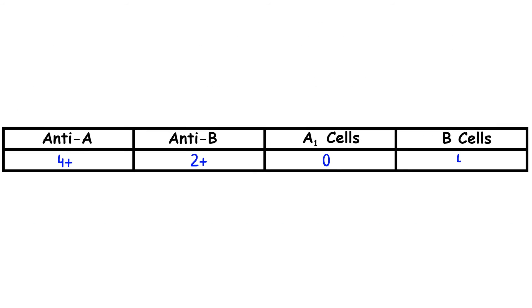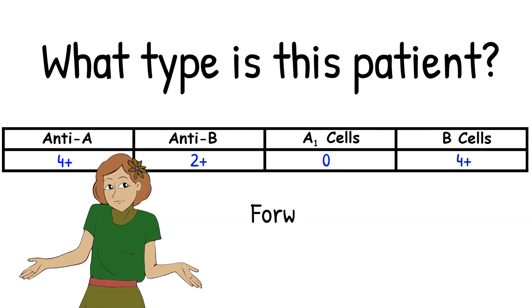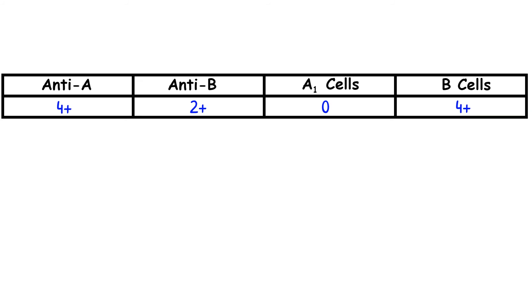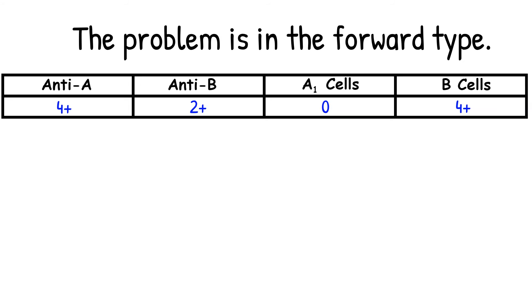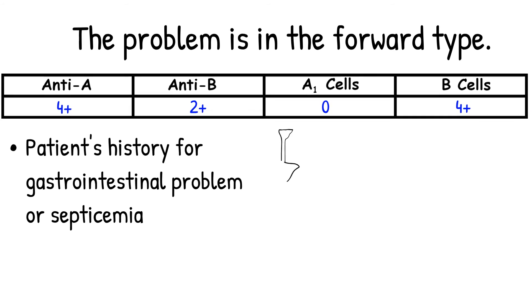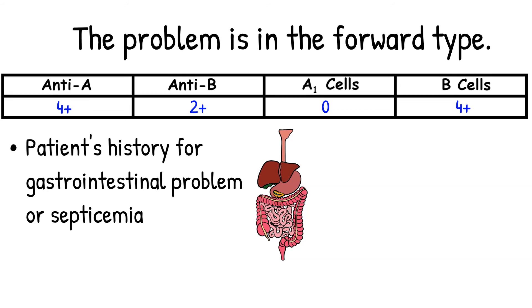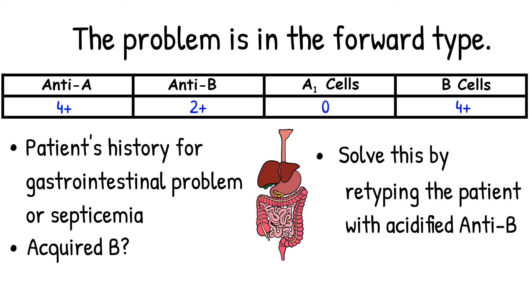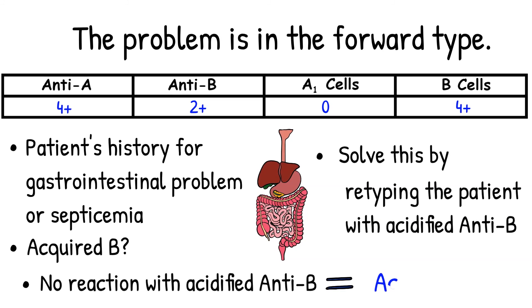One more example. What would you do if you see this type of reaction? The forward gives you type AB with a weak expression in anti-sera B, and the reverse gives you type A. Looking at these reactions, I would suspect that the problem is in the forward type — there is an unexpected reaction in anti-sera B. Here are the steps to solve the problem: check patient history for lower gastrointestinal problems or septicemia. If the patient has a history of lower gastrointestinal problems or septicemia, then it is possible that the patient has an acquired B. To solve this problem, repeat the forward typing in an acidic environment. Acquired B in an acidic environment only reacts with a true group B person.